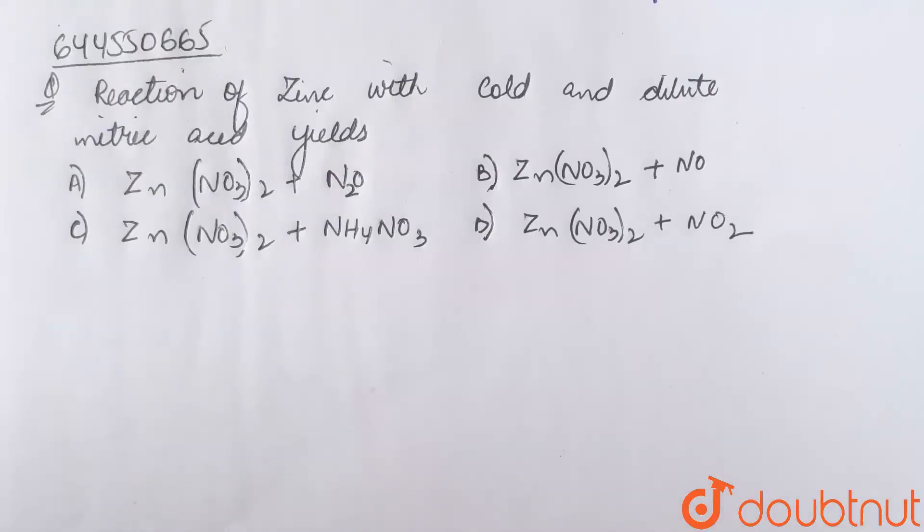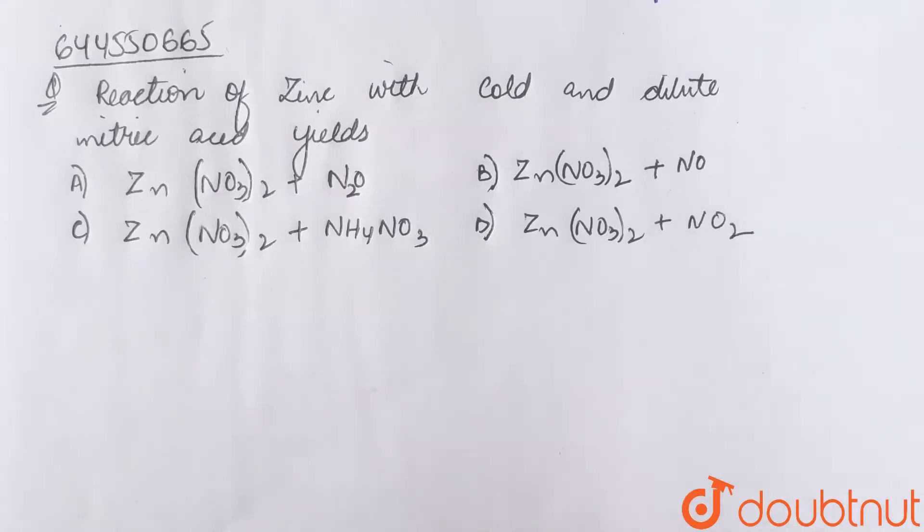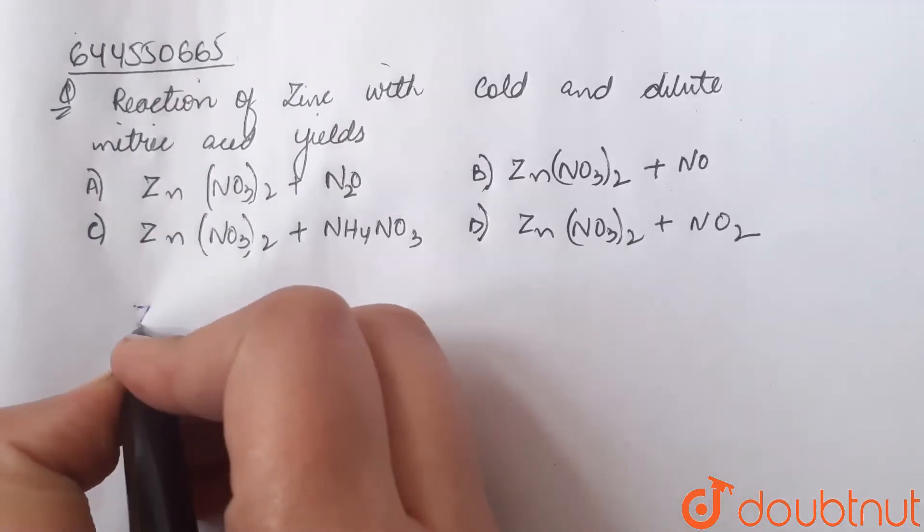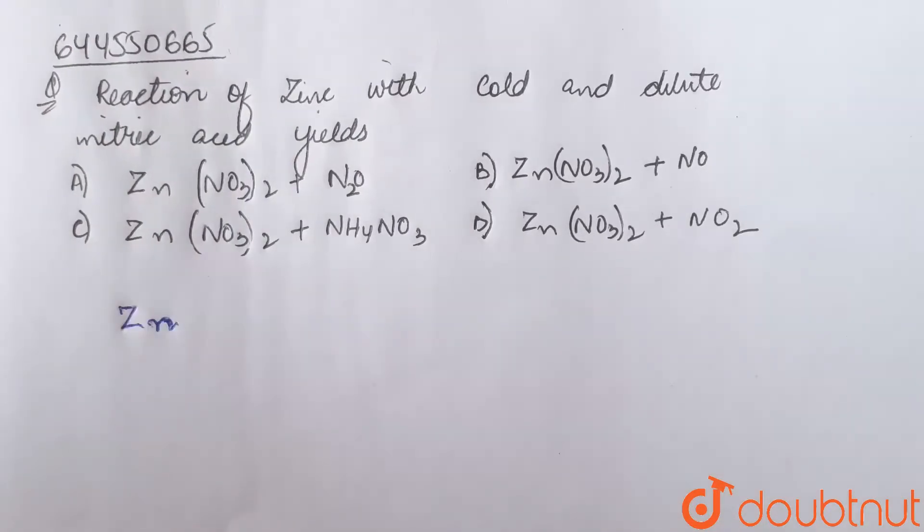Question: Reaction of zinc with cold and dilute nitric acid yields. Among the given four options, we have to see what are the products when zinc reacts with cold and dilute nitric acid.